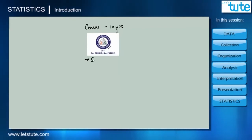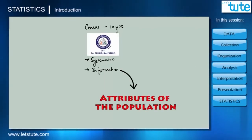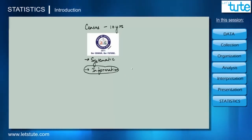A census is a systematic procedure where we try to acquire and record information about the different attributes of the population. This raw or unorganized information that we acquire is called data.